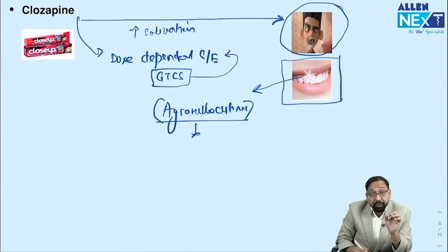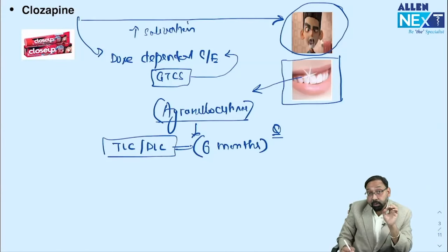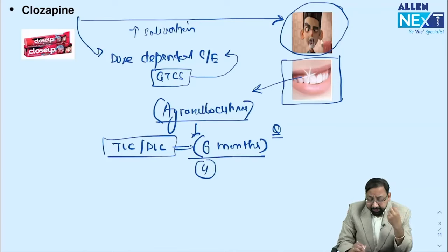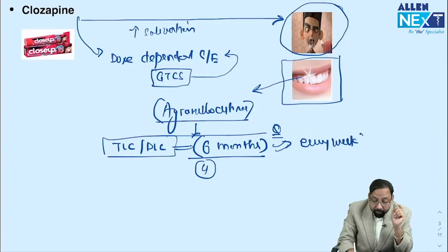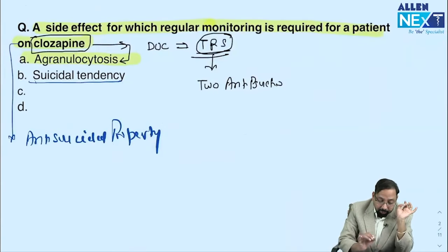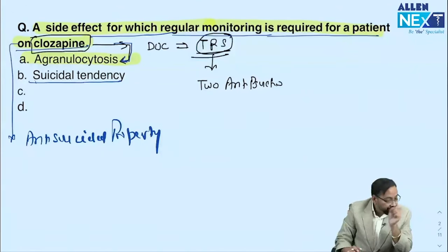Agranulocytosis is a very dangerous side effect of clozapine. That is why we must monitor the patient every week with TLC and DLC. This monitoring continues every week for six months — a question was asked in AIIMS about this. So the answer to 'side effect requiring regular monitoring in a patient on clozapine' is agranulocytosis.